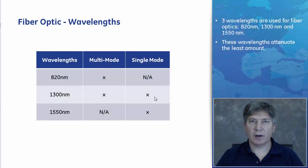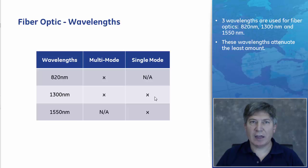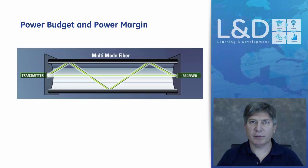The wavelengths of light used in fiber-optic communications are 820, 1300, and 1550 nanometers. At these wavelengths, light attenuates less than at any other wavelength as it travels through the fiber-optic medium. 820 nm is only offered in multi-mode; 1300 nm is offered in both single and multi-modes; while 1550 nm is only offered in single mode. Even though fiber-optics are robust, you still need to consider two calculations: power budget and power margin.